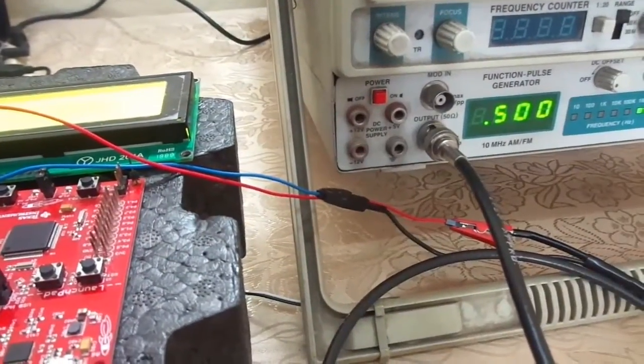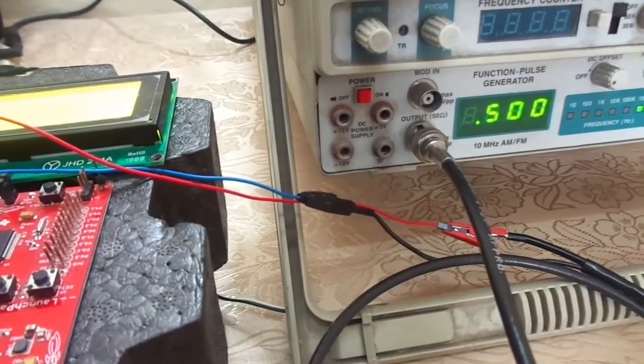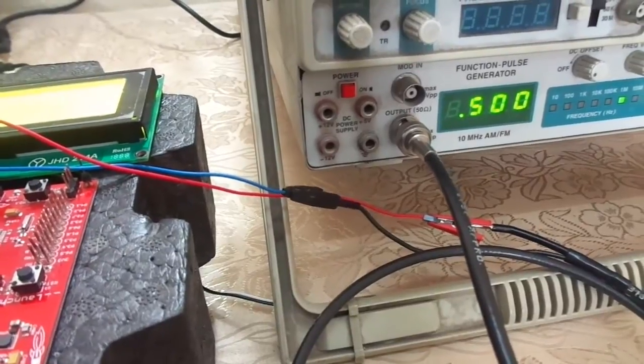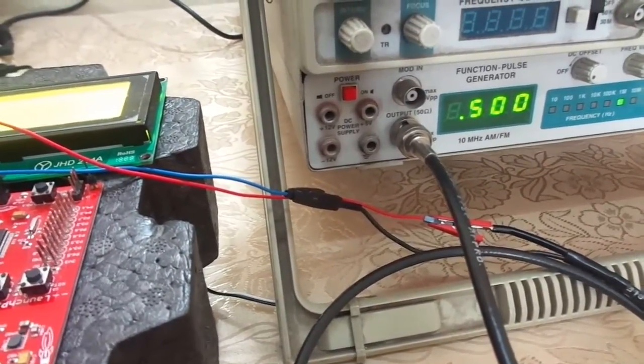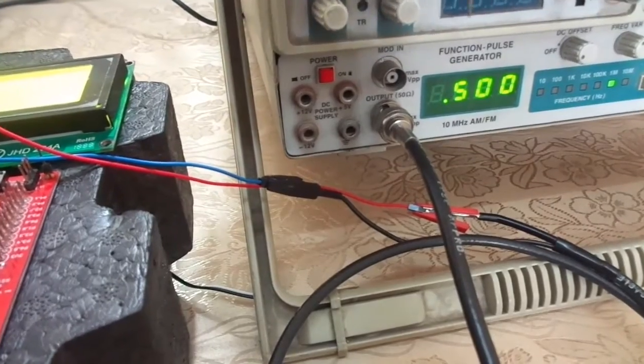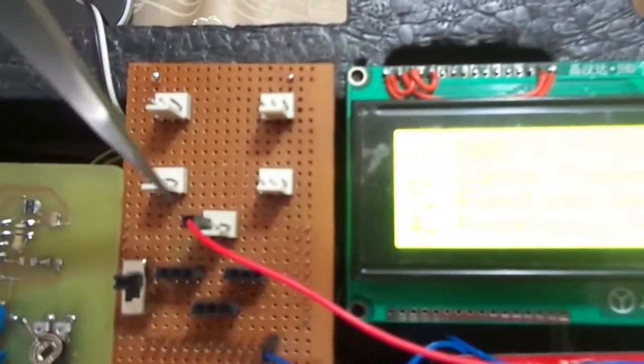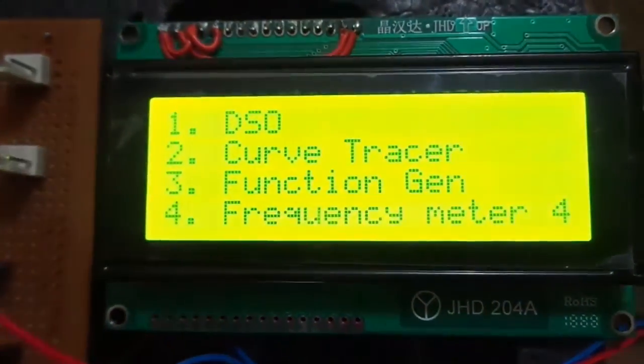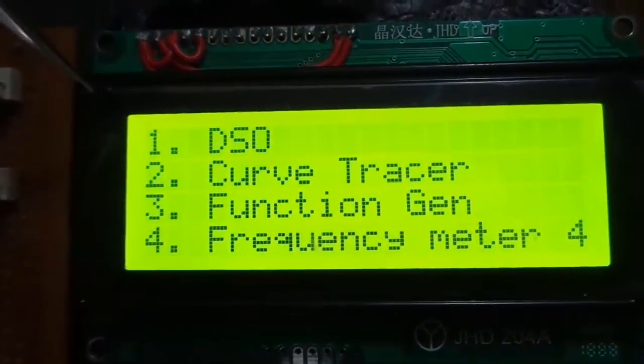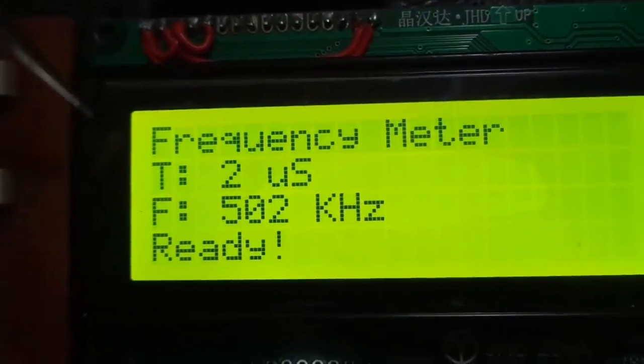We have also incorporated a frequency counter in our project, which is capable of measuring frequencies up to 25 MHz. We have applied a 500 kHz frequency to the frequency counter pin. The system is showing the measured frequency as 502 kHz.